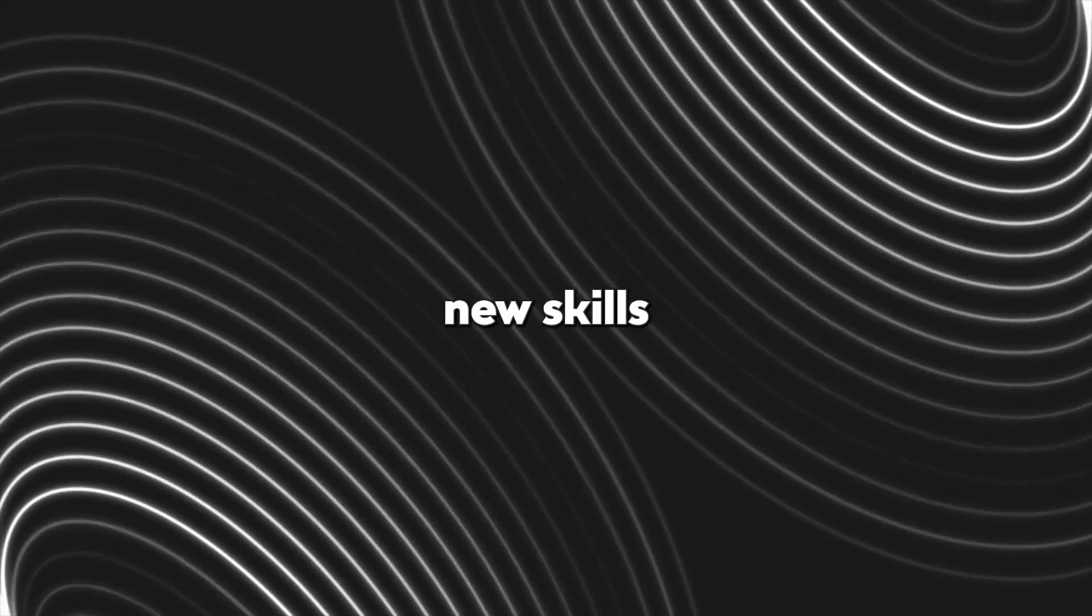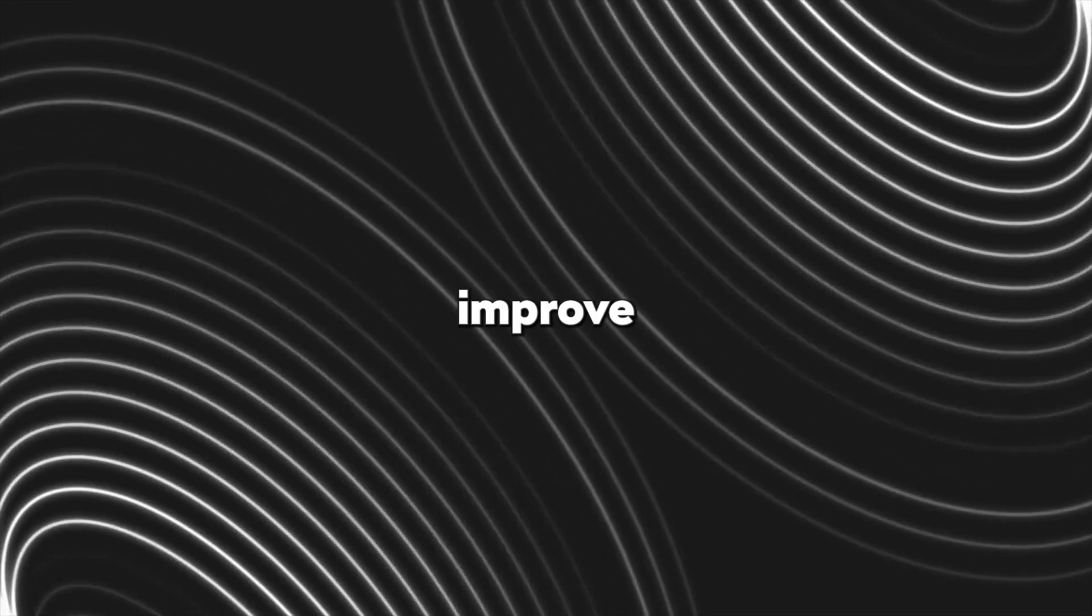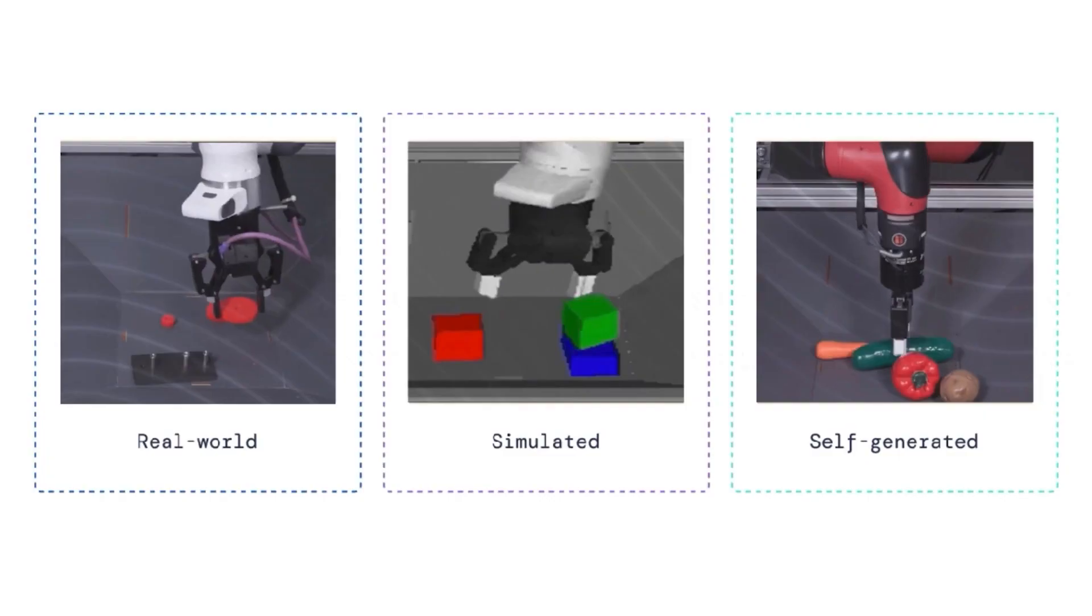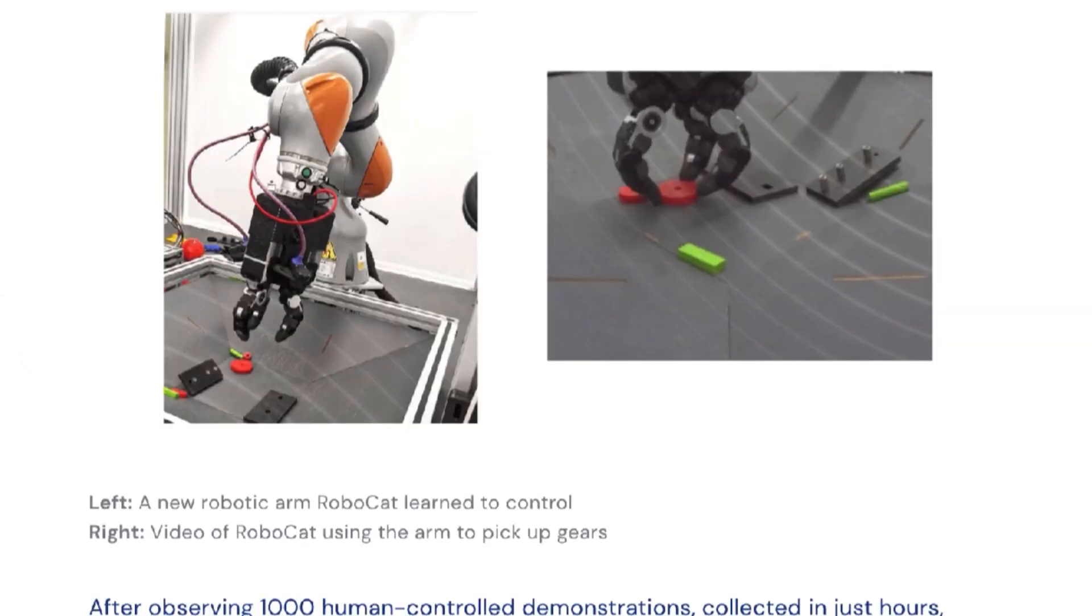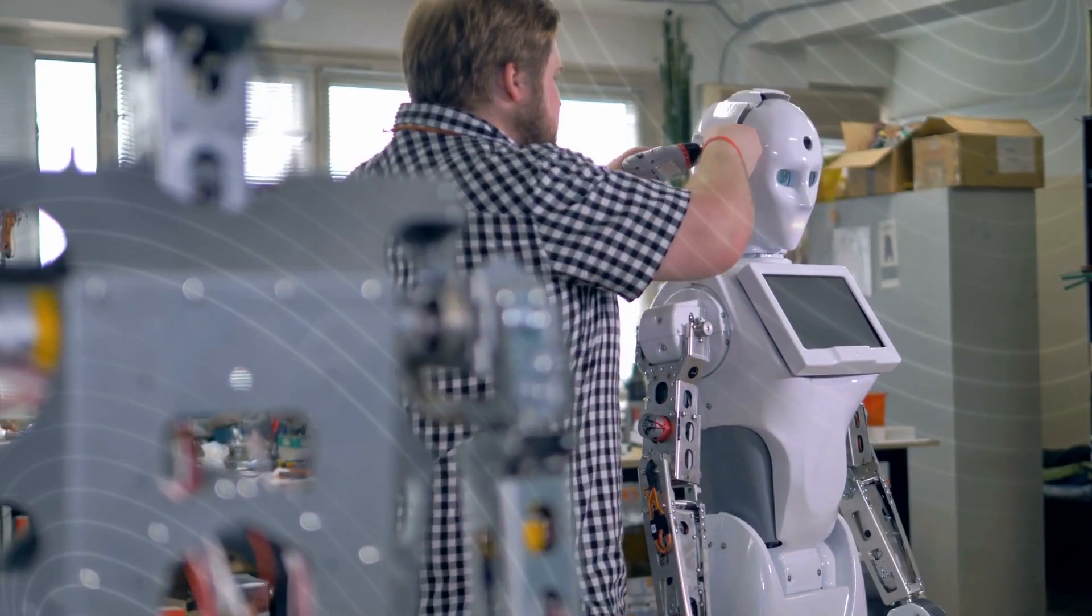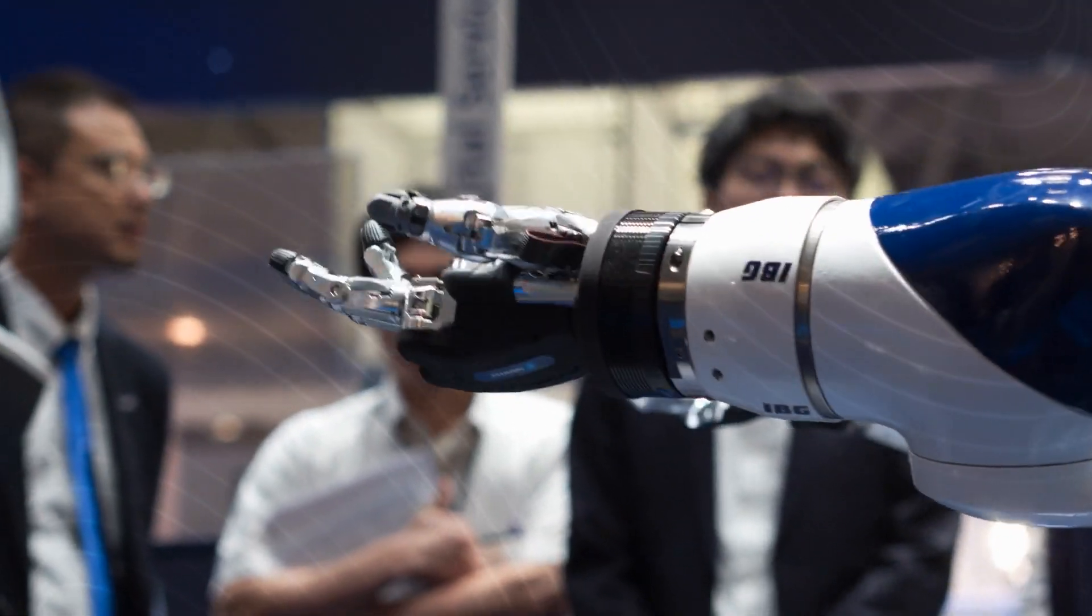RoboCat can acquire new skills automatically, and not just acquire them, but also improve upon them in the process. Its versatility in adapting to new tasks and new robotic devices allows us to enter a new generation of general-purpose robotic agents that can be extremely helpful in various fields.